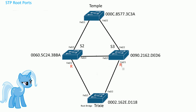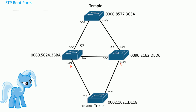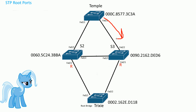S2 and S3 become root ports toward the root bridge, and they send out BPDU frames saying the cost to the root bridge is 19. Focusing on S3: it sends out a cost of 19, and when the next switch receives it on a fast ethernet port, it adds 19 to that cost, getting 38. So going out through that port costs 38 to reach the root bridge.